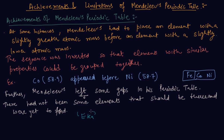For instance, Scandium, Gallium, and Germanium. These elements were discovered later and have properties similar to Eka-boron, Eka-aluminium, and Eka-silicon respectively. So these were the achievements of Mendeleev's periodic table.